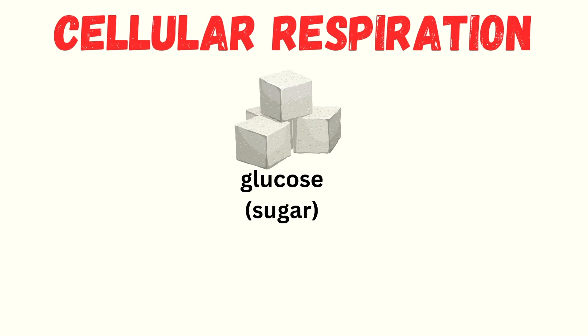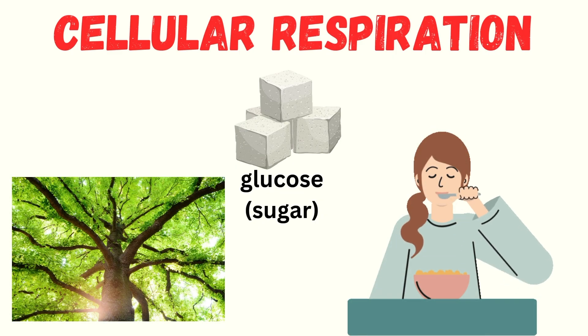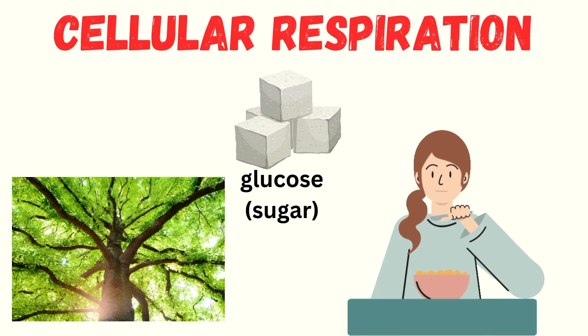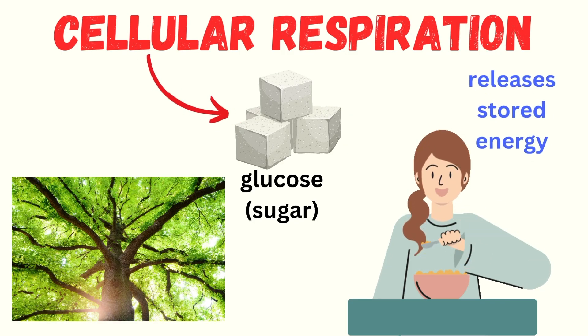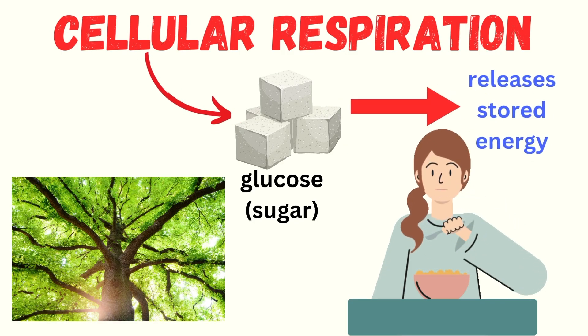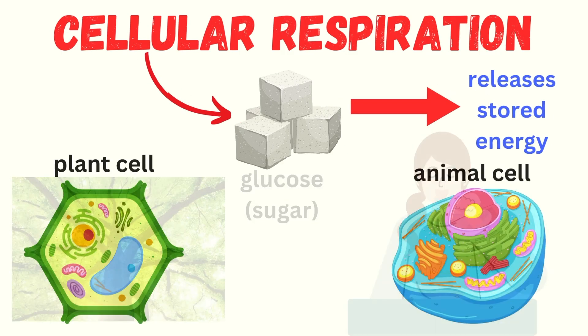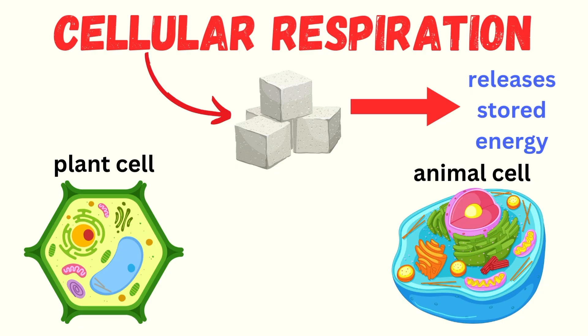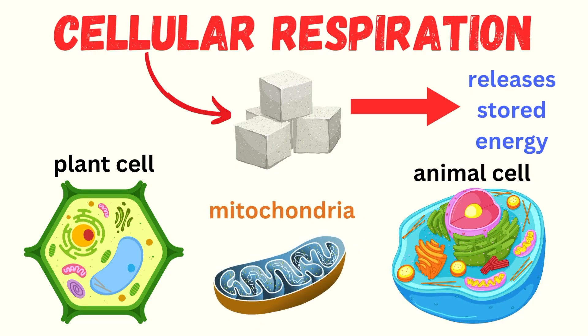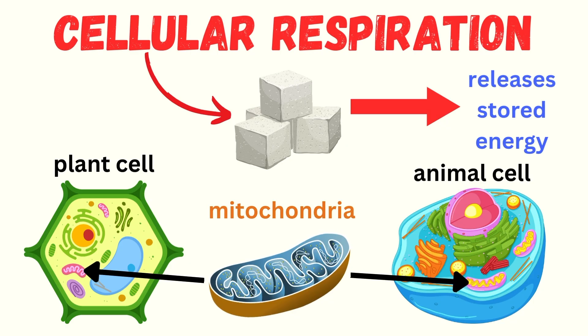The key player here is glucose — that's the type of sugar you get from the food you eat, or that plants create through photosynthesis. During cellular respiration, glucose is broken down inside the cell to release its stored energy. This all happens in a special part of the cell called the mitochondria. You can think of them as the cell's power plants, where glucose is combined with oxygen and the magic begins.